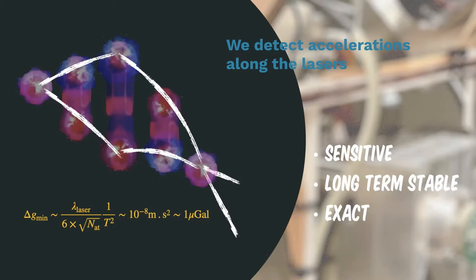These fringes will be sensitive to accelerations along the laser with very high sensitivity, so that we can detect tiny changes of the order of one billionth of Earth acceleration. These sensors are also very stable so that we can record these variations over very long periods of time with very high accuracy.